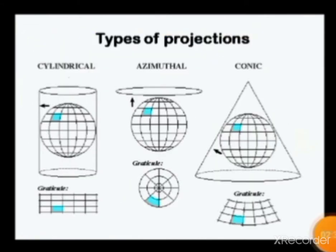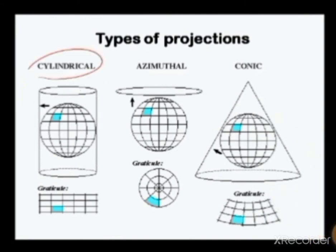So how do you project? You know what we call cylindrical? It's like a drum. That is a cylinder. When you say azimuthal, it is a flat surface.